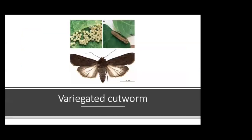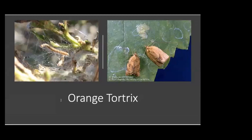Variegated cutworm is one of the cutworms that causes damage in grapevines. We also have the spotted, brassy, black or greasy, and dark-sided cutworm. These cutworms usually cause economic damage to grapevines in early spring when feeding damages or destroys developing buds. The larvae emerge from the soil or under the bark and feed at night, so you'll often come across the damage during the daytime with no insect present.